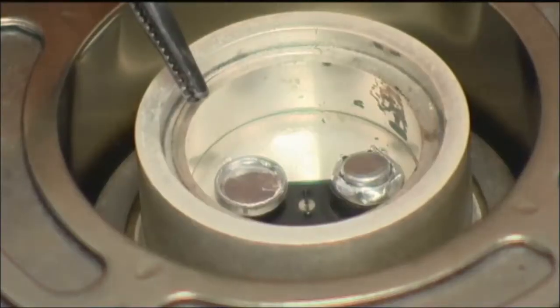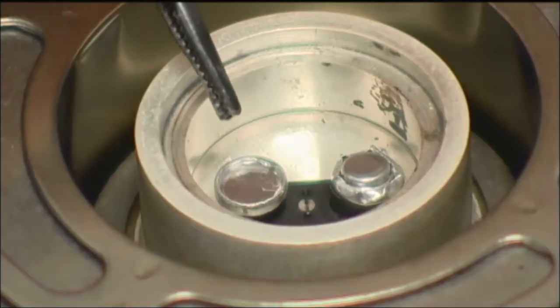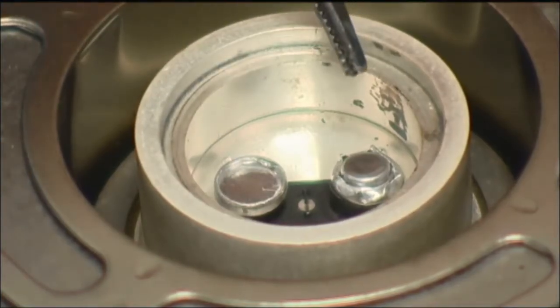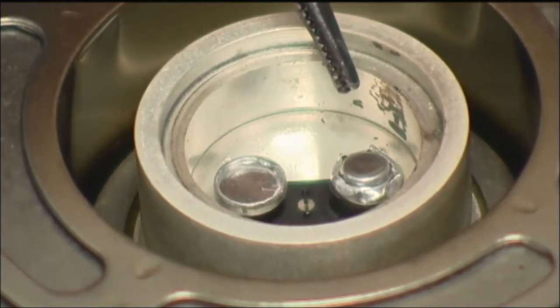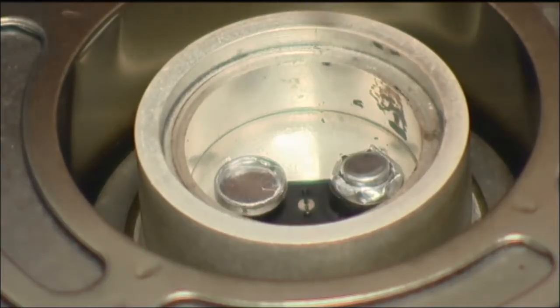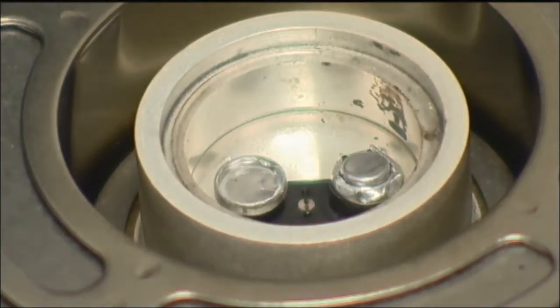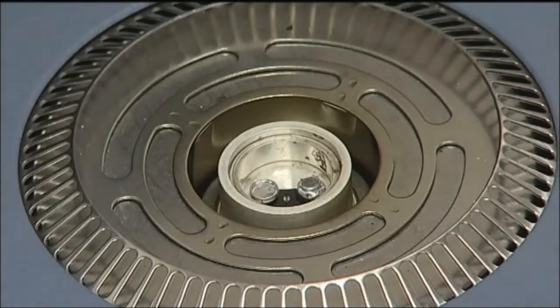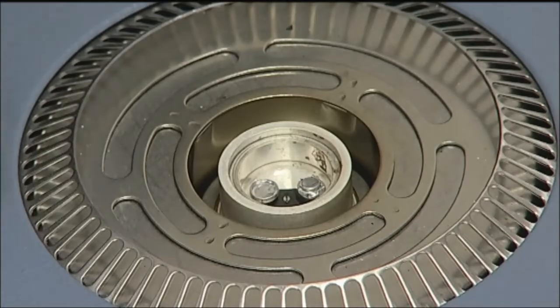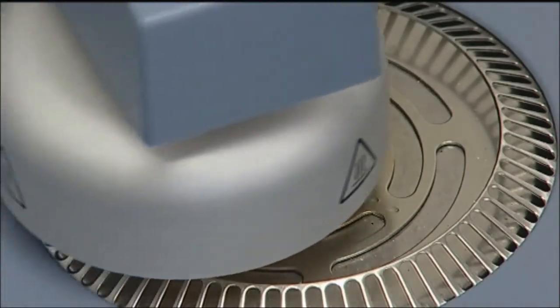On the left side we have an empty pan as a reference. And on the right side we have the aluminum pan with the sample for the DSC analysis. And close it. Then we are ready to start the DSC analysis of the sample.